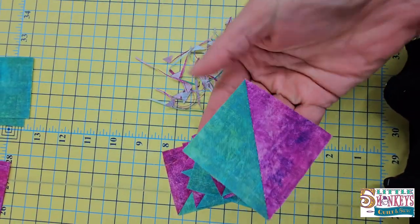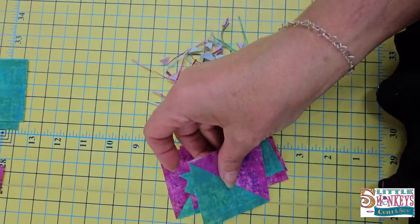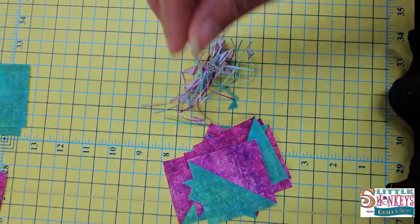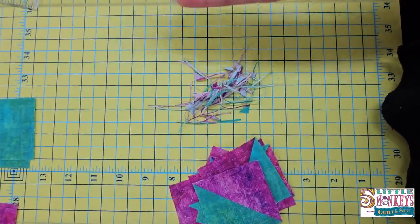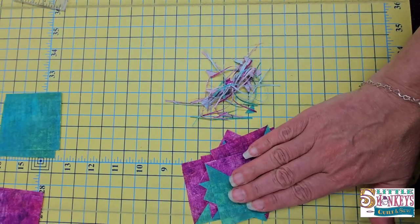So now we have eight perfect little half square triangles and some really fun quilter spaghetti. Not a lot of waste in this technique, but perfect triangles.